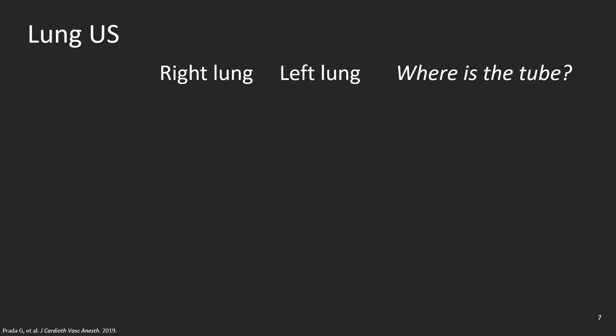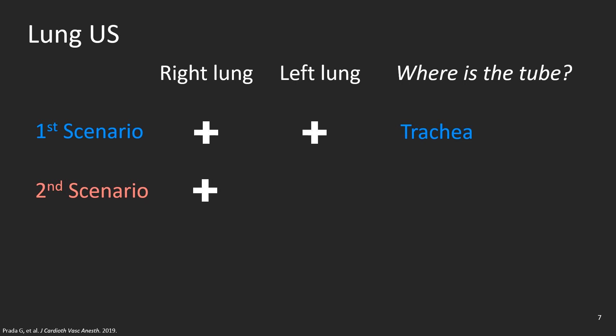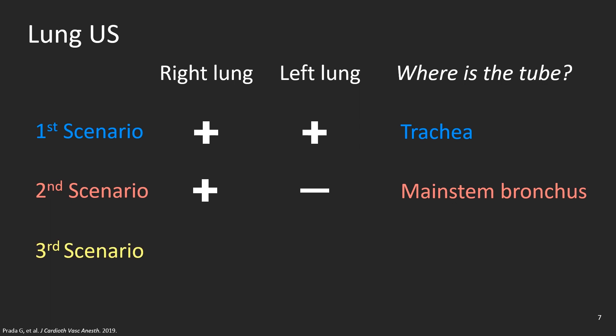Now let's say that you're scanning the lungs of an intubated patient looking for lung sliding while you ventilate the patient. There are three possible scenarios. First scenario: both lungs show lung sliding or seashore sign — both lungs are being ventilated, so the tube is in the trachea. Second scenario: one lung shows lung sliding but the other shows absent lung sliding or barcode sign, meaning only one lung is being ventilated. The tube must be in the right main stem bronchus. Third scenario: both lungs show absent lung sliding or barcode sign, meaning both lungs are not being ventilated. The tube is therefore in the esophagus, sending air to the stomach.